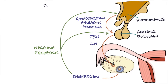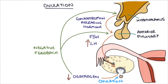Just before ovulation, there's a dip in estrogen as the follicles are getting ready to release the egg. There's a spike in luteinizing hormone that causes one of the follicles to reach the surface of the ovary and release the ovum — the unfertilized egg. Ovulation happens at day 14 of a 28-day cycle.